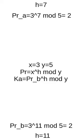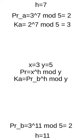And the final step is to calculate the key. The key is calculated by raising to the power of the hidden number, the public result of the other party, modulo Y. For person A, that is 2 on the power of 7 modulo 5, or 3.